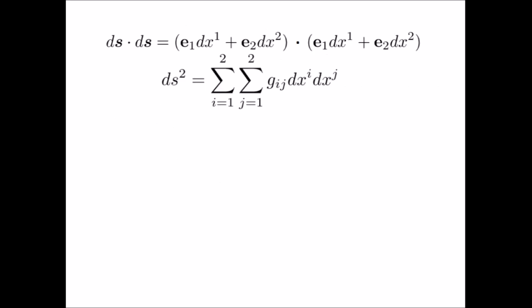The square distance ds squared is just the dot product of ds with itself. The dot product between ei and ej is called a metric tensor, denoted by gij. The metric tensor can be represented as a matrix of dimension equal to the number of intrinsic coordinates, two in this case.